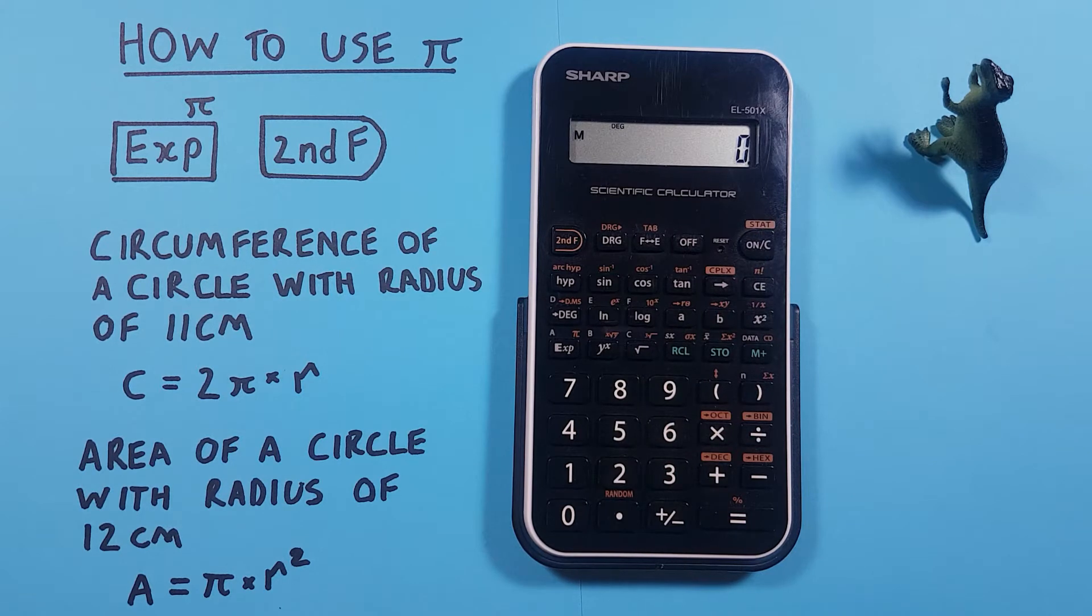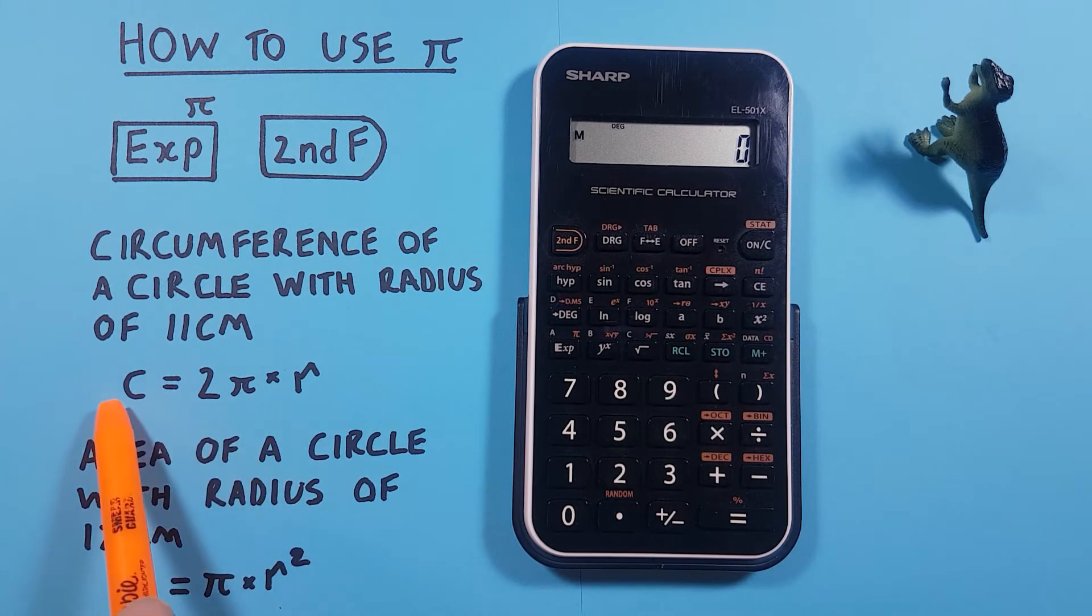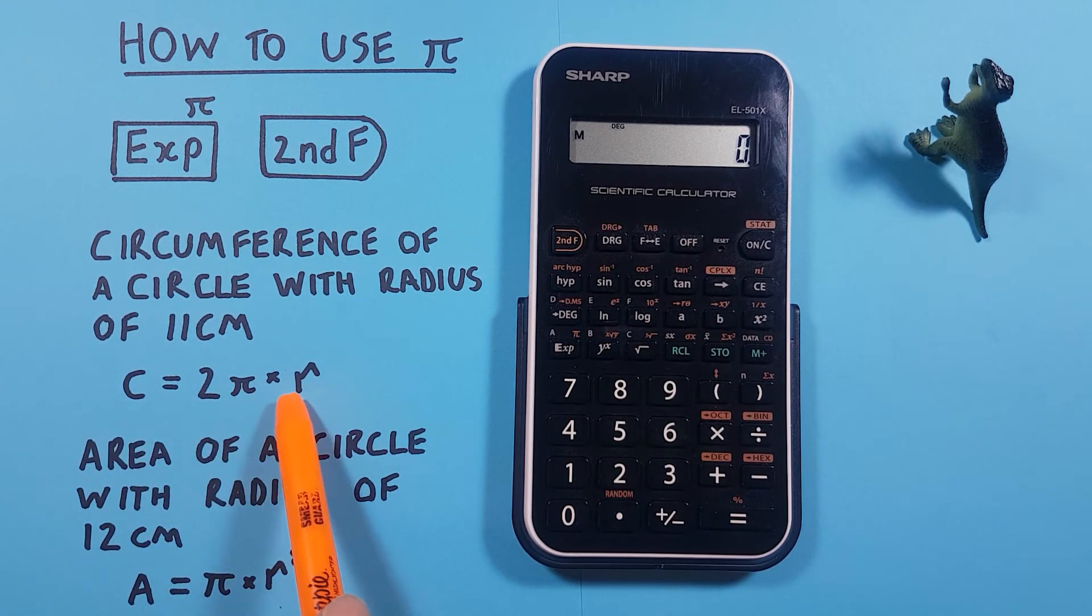So for an example, if we want to do some calculations like finding the circumference of a circle with a radius of 11 centimeters, we know we need to use PI in this formula here. C for circumference is equal to 2π times R.